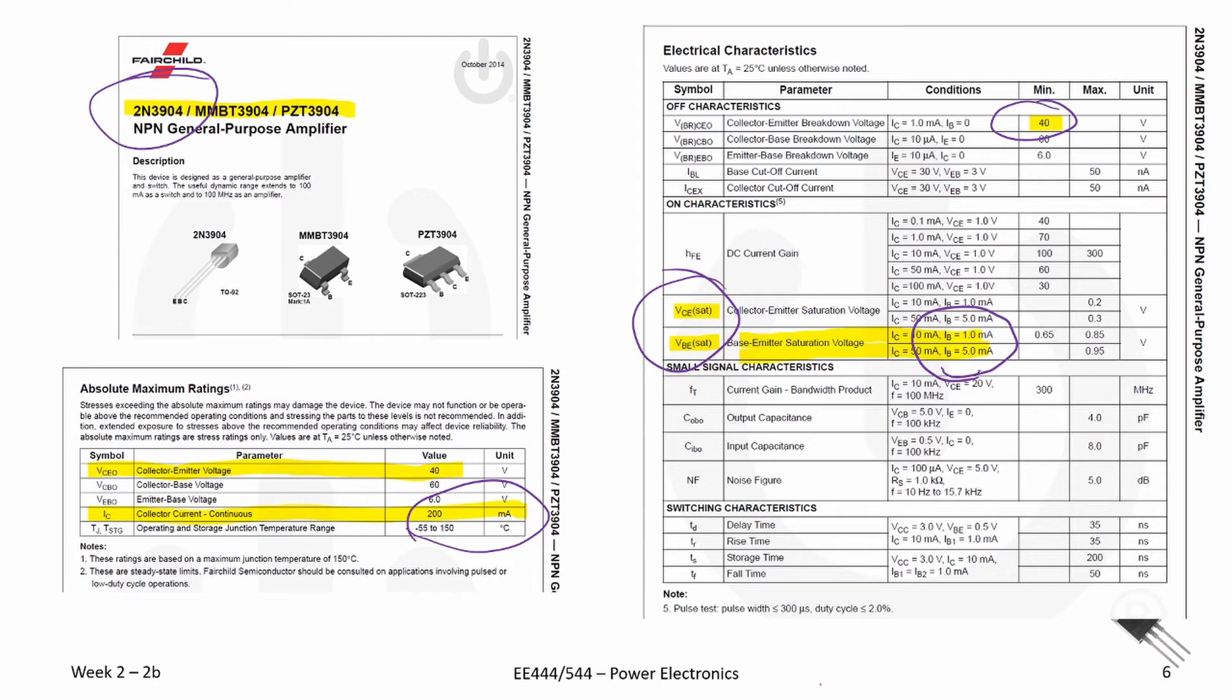We see the base current is going to be anywhere from 1 milliamp to 5 milliamps to place the device into saturation. And the voltage, when the device is saturated between the base to the emitter, that base to emitter voltage, it is almost a diode drop. We see somewhere between 0.65 to 0.95.